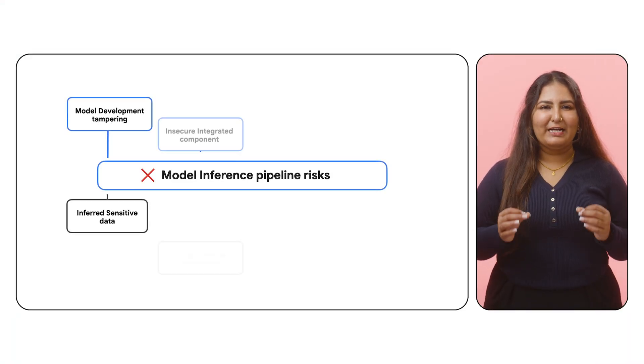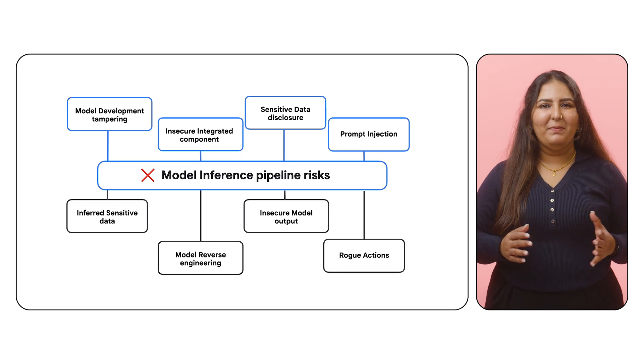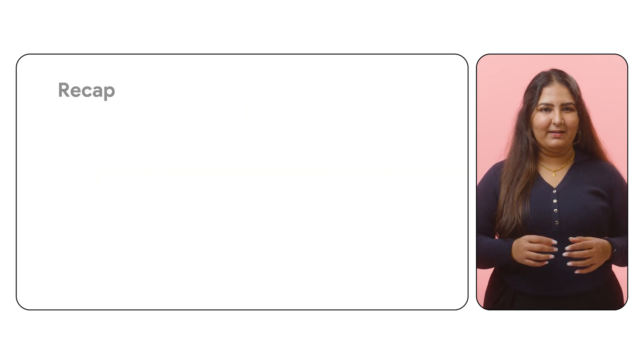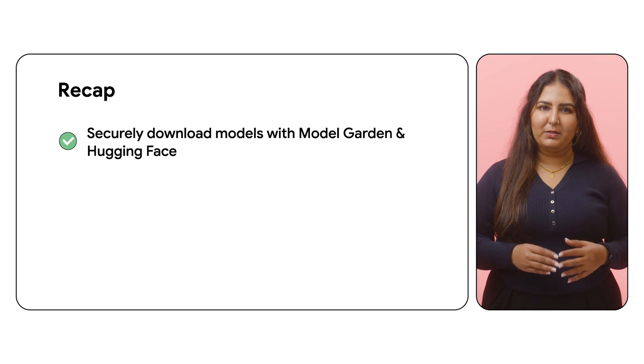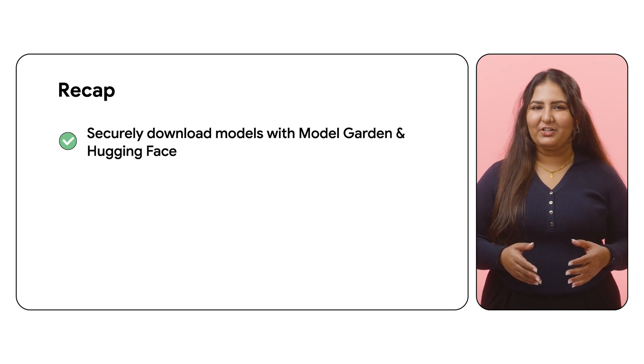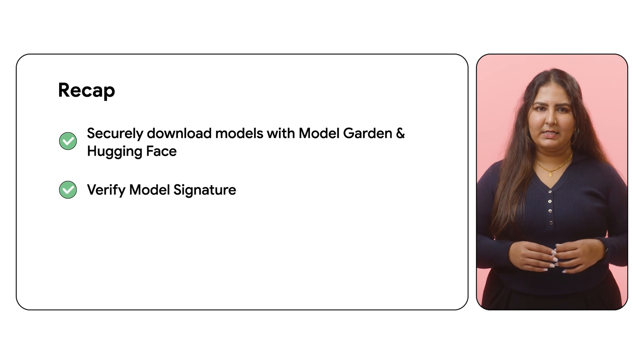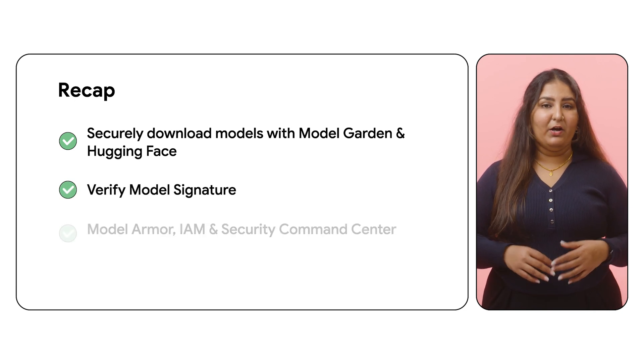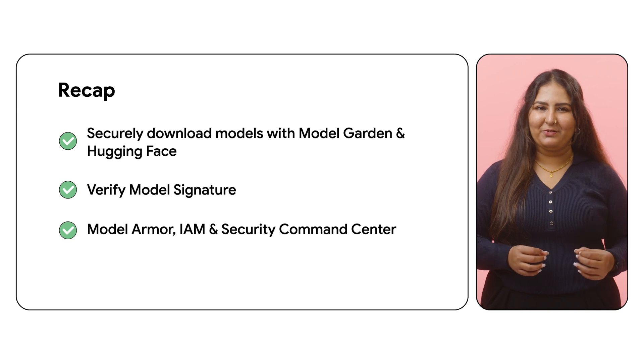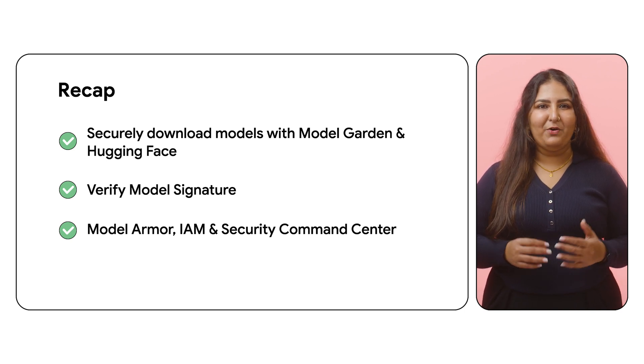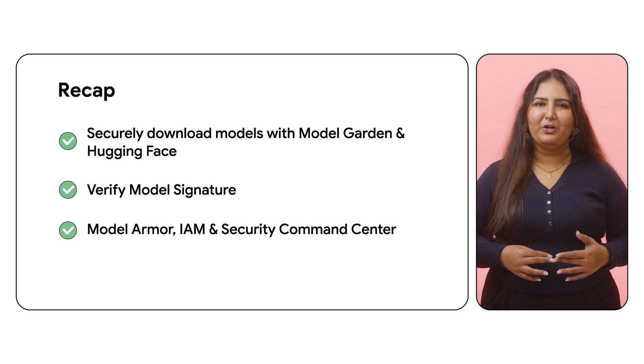In this video, we explored critical risks in the AI inference pipeline and how to mitigate them with a multilayered approach. We learned how to more securely download models with Google Cloud's Model Garden and Hugging Face integration, how to ensure model authenticity by verifying model signatures, and about Google Cloud's powerful security toolkit — Model Armor, IAM, and Security Command Center — to monitor and help secure your AI model usage. By leveraging the strategies and tools covered in this video, you're significantly reducing your model usage risks in Google Cloud. To learn more, check out the resources and best practices linked below. Happy coding!